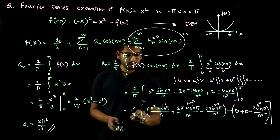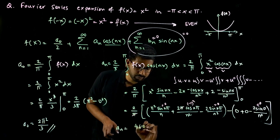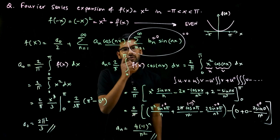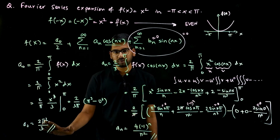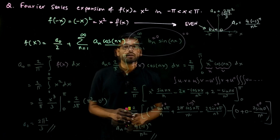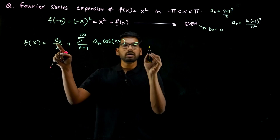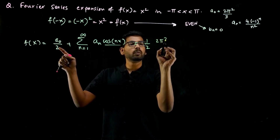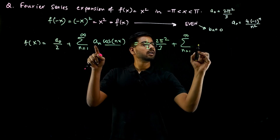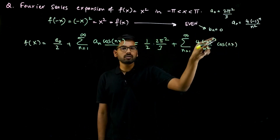So only the cosine term is non-zero. The pi in the numerator and the pi in the denominator cancel, giving aₙ equal to 4 times minus 1 to the power n, divided by n squared. So now we have aₙ and bₙ: bₙ is 0, and aₙ equals 4 times minus 1 to the power n over n squared. Substituting into the Fourier series: f of x equals pi squared by 3, plus summation from n equal to 1 to infinity of 4 times minus 1 to the power n over n squared, times cos nx.